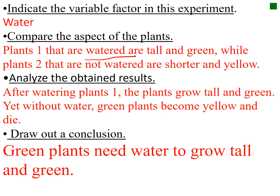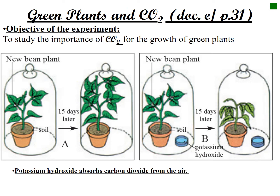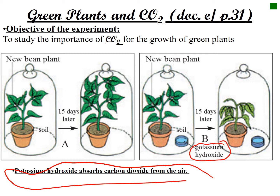The experiment on page 31 identifies the importance of CO2 for the growth of green plants. We have two plants, A and B. Plant A contains all suitable conditions, while plant B contains potassium hydroxide, which absorbs carbon dioxide, so there is no CO2 in plant B.